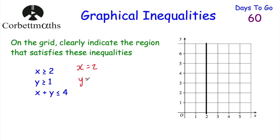Now we're going to draw the graph of y equals 1. We're going to draw a solid line because it's greater than or equal to. It's y equals 1, so that's the point where all the y-coordinates are 1 — the horizontal line passing through 1 on the y-axis. So let's draw that line — that's the line y equals 1.